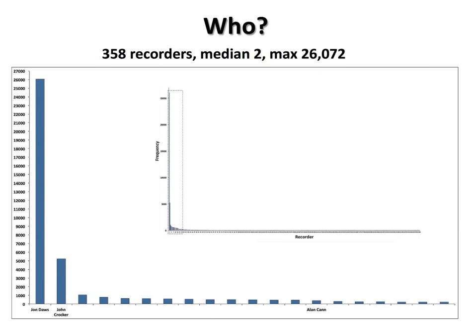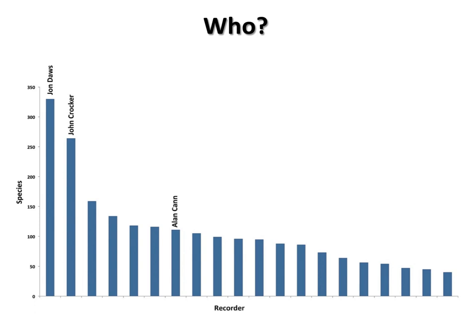If we ask who has recorded spiders in Leicestershire and Rutland, the whole county database shows a very long-tail distribution. The median number of spider records per person in the database is just two. Of the 358 recorders, most record one or two species and then never record spiders again. But looking at the expanded graph of the top 20 recorders, we see the remarkable contributions of John Dawes and John Crocker. If you look at number of species recorded rather than number of records, I start to look a little more respectable.